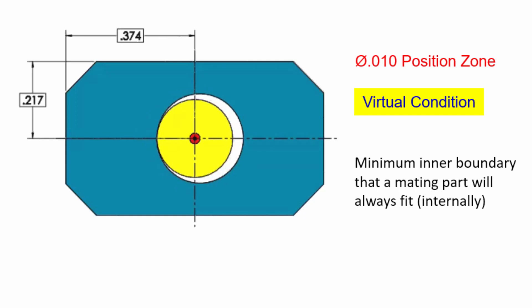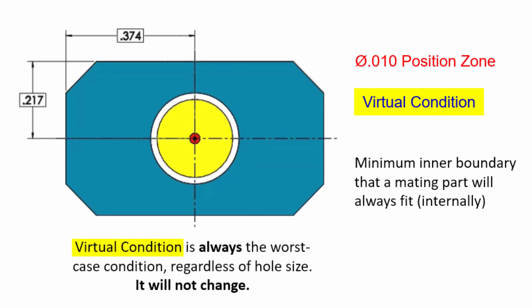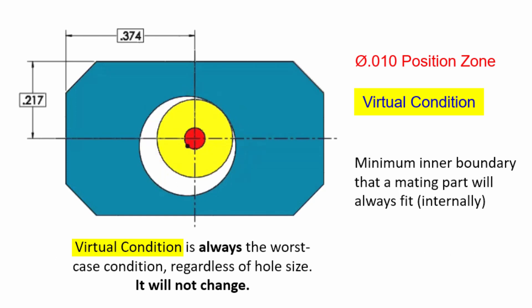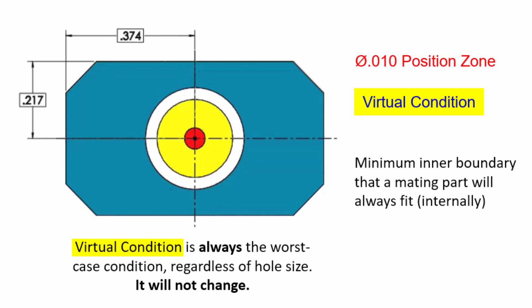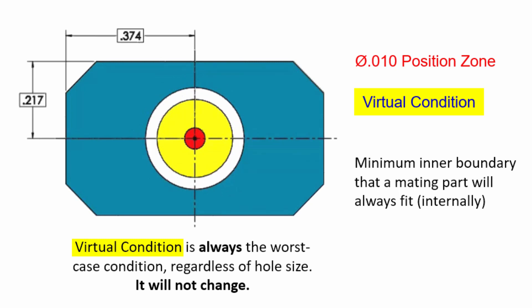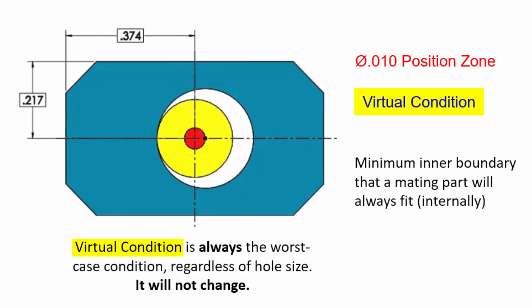With virtual condition you're allowed variable size tolerance, meaning that as your part gets larger, you gain more bonus tolerance. You can be further out of position with your hole because you have a larger hole, ensuring that the same size pin could still fit in there in the worst case. Despite however big or small the hole is, it still cannot ever cross this imaginary virtual condition boundary.